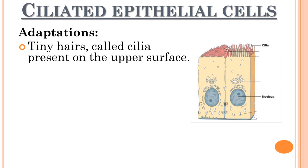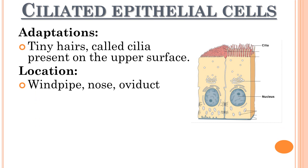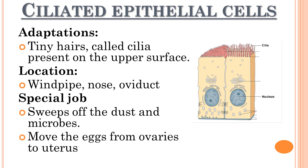Ciliated epithelial cells have tiny hair-like structures called cilia on their top surface. These cells are found in the windpipe through which we breathe, the nose and the oviduct. They clean dust particles and microorganisms from the locations where they are found. Ciliated epithelial cells also move eggs from the ovaries to the uterus through a tube called the oviduct.